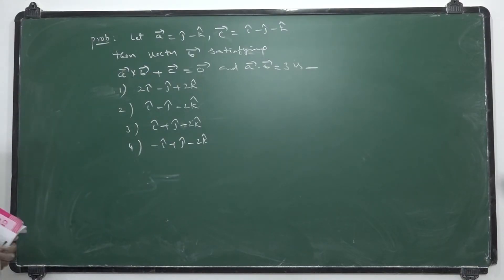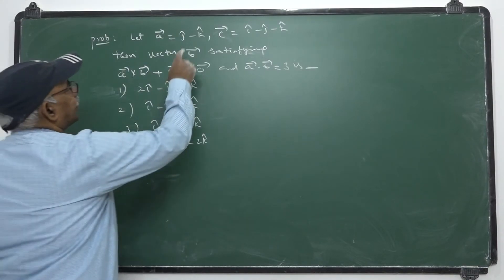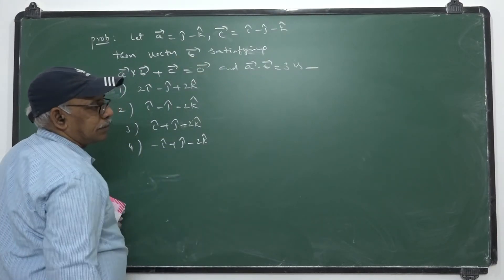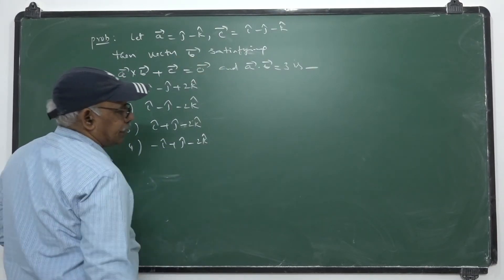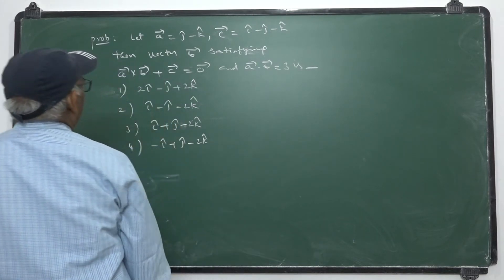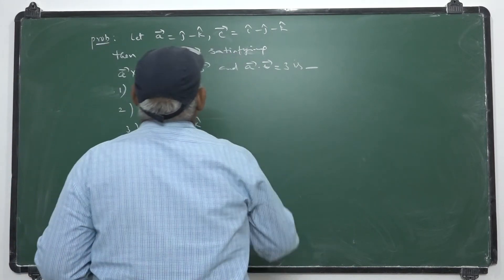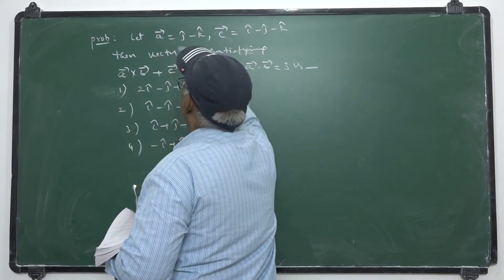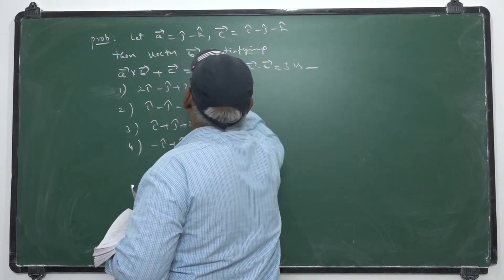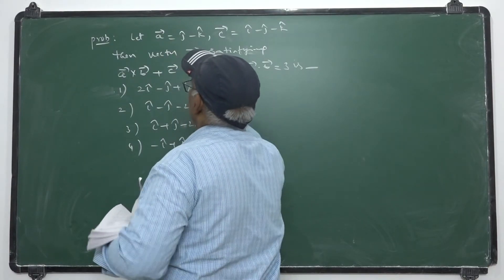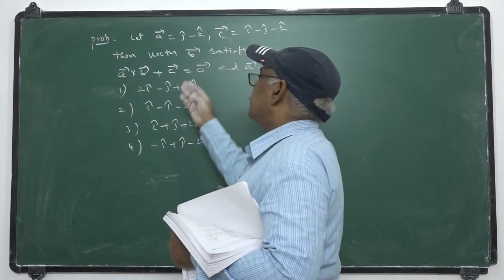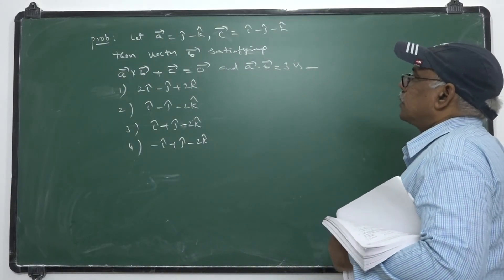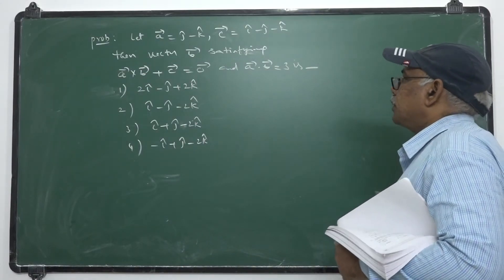So the options are here. You can observe ā · b̄ = 3 and pick up the answer — that is one immediate procedure. The dot product of ā and b̄ must equal 3. Observe for which vector the dot product with ā is 3; that is an easy estimate.